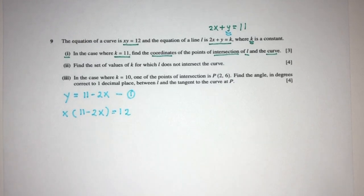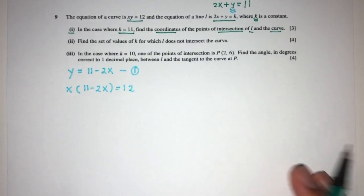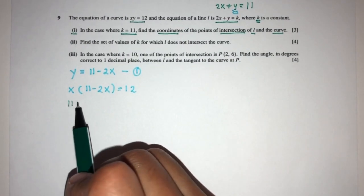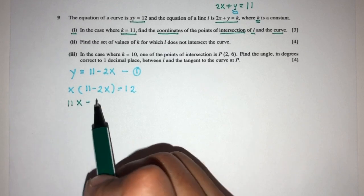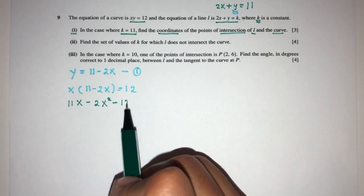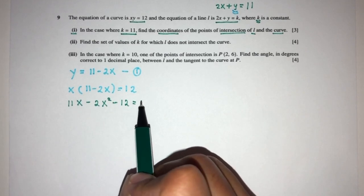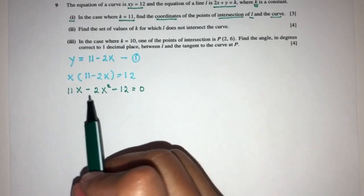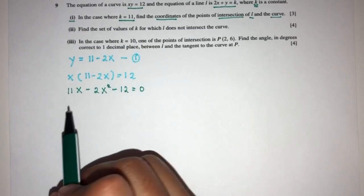Now I just have to solve this equation. Expanding gives 11x minus 2x squared minus 12 equals 0. Now we can simplify — let's move everything to one side.